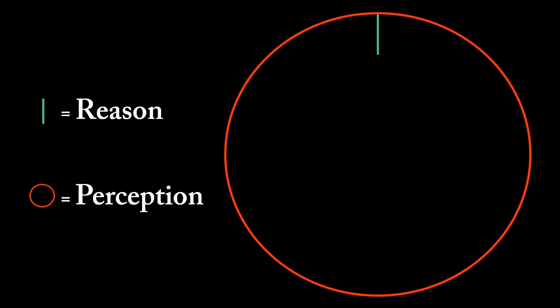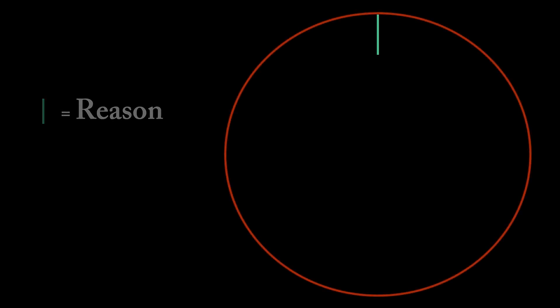Reason versus perception. So what we have here, this green line, which looks somewhat like a lightsaber, represents reason. And the red circle with which it's encased represents perception.